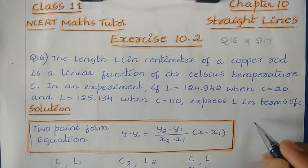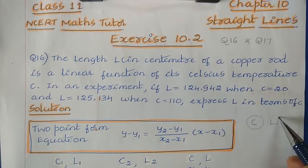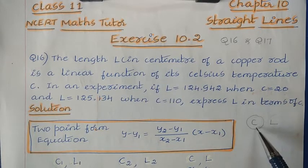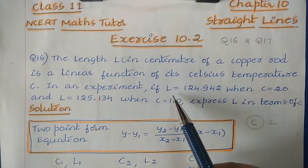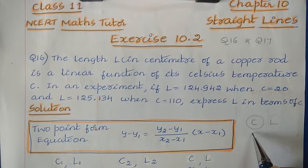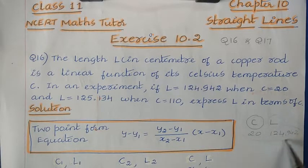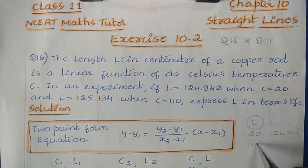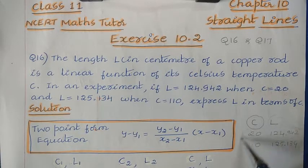In this question, we can take the coordinate values as c and l, where c is the Celsius temperature and l is the length. They have given two different values: the first is l = 124.942 when c = 20, and the second is l = 125.134 when c = 110.